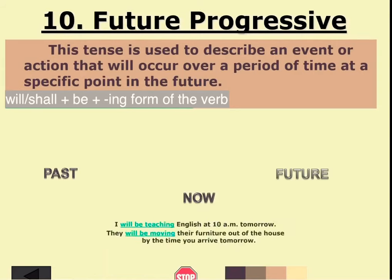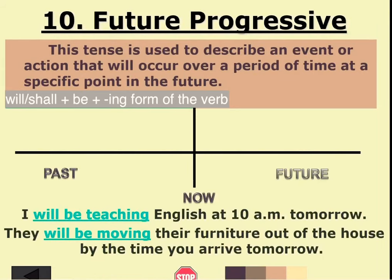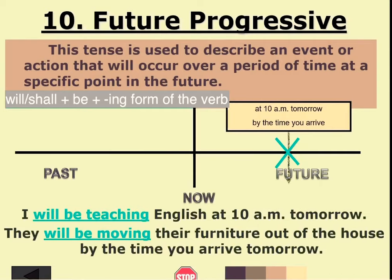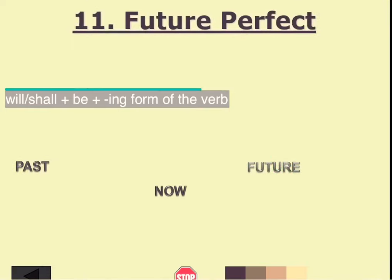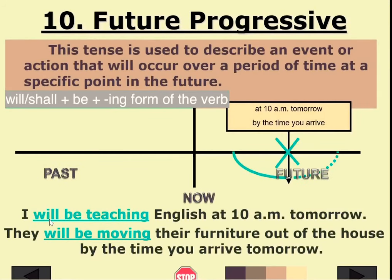Number 10 is the future progressive tense. This tense describes an event or action that will occur over a period of time at a specific point in the future. Examples: 'I will be teaching English at 10am tomorrow.' 'They will be moving their furniture out of the house by the time you arrive tomorrow.' There is a specific future time when the action will be occurring. The pattern is 'will' or 'shall' plus 'be' plus the ing-form of the verb.